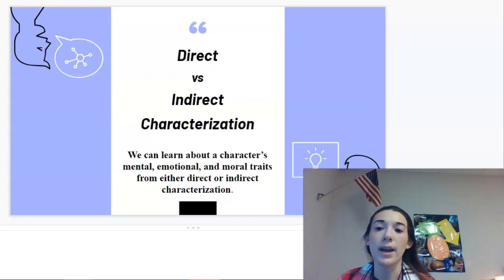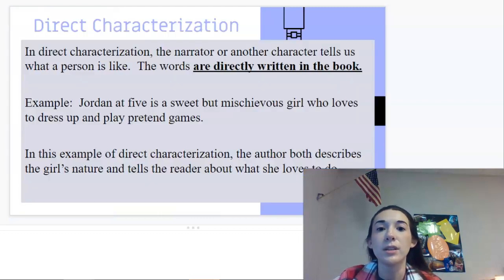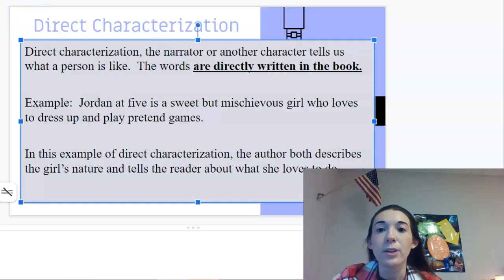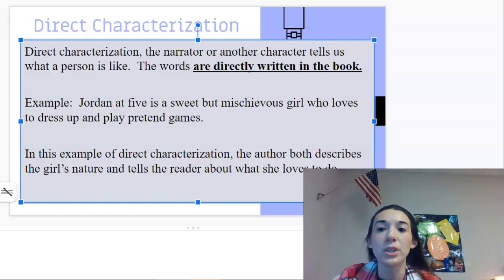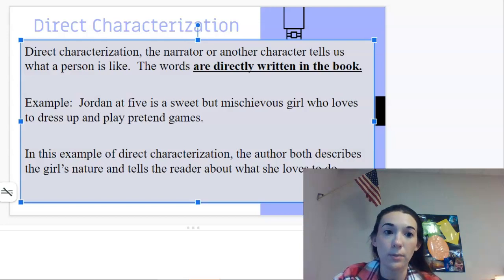Next we're going to look at how authors create characterization using direct versus indirect literary skills. We can learn about a character's mental, emotional, and moral traits through either method. Direct characterization is when the narrator or another character directly tells us what a person is like — the words are written explicitly in the book. For example: "Jordan at five is a sweet but mischievous girl who loves to dress up and play pretend games." The author directly describes the girl's nature and tells the reader what she loves.